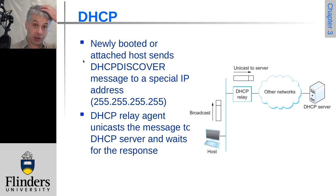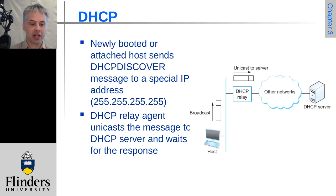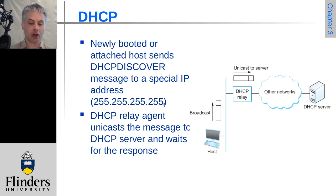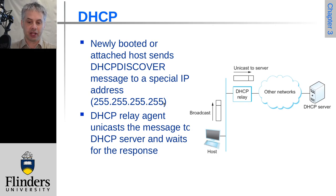When a computer is newly booted or attempts to attach to the network, it sends a DHCP discover packet — it's an IP packet typically in an ethernet frame — and it's sent to the global broadcast IP address. If the DHCP server is on the local network segment, it will receive that directly.